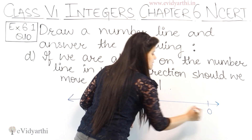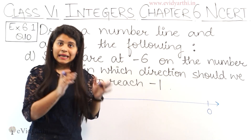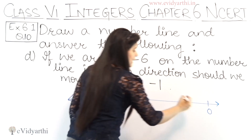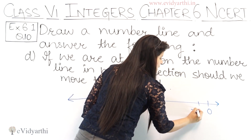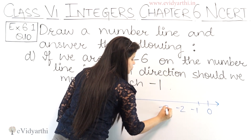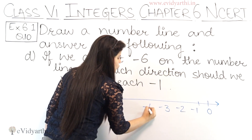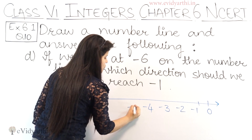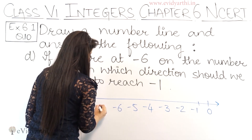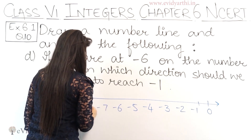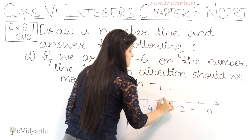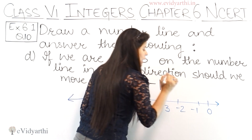Again, this part also has negative numbers. So let's plot from minus 1, minus 2, minus 3, minus 4, minus 5, minus 6, minus 7, minus 8. We are here at minus 6.